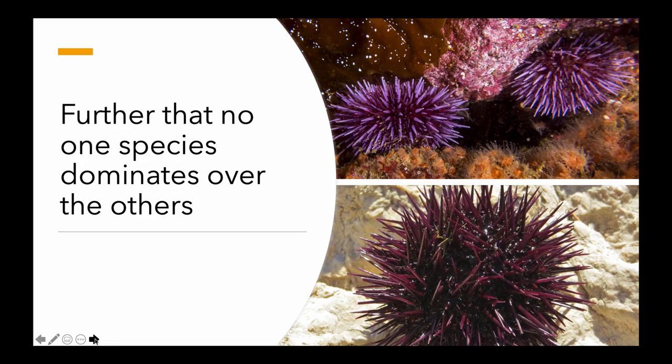For example, if one of these species were to dominate and increase in numbers, such as the sea urchins, then they would actually cause the collapse of the entire ecosystem, because the sea urchins eat the seaweed, and if all the seaweed is gone, then everything else will disappear.